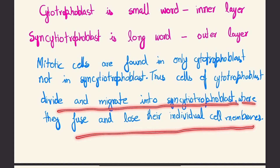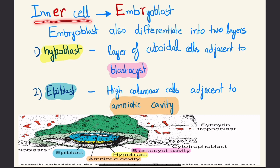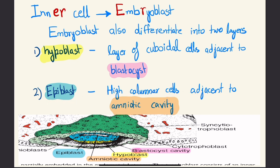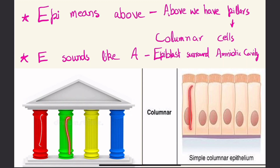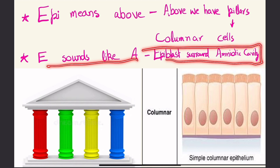The inner cell mass gives rise to the embryoblast, which also differentiates into two layers: hypoblast — a layer of cuboidal cells adjacent to the blastocyst cavity — and epiblast — high columnar cells adjacent to the amniotic cavity. Here the epiblast is shown in blue, with the amniotic cavity inside it. A tip to remember: 'epi' means above, and epiblast surrounds the amniotic cavity; its columnar cells are like tall standing pillars.